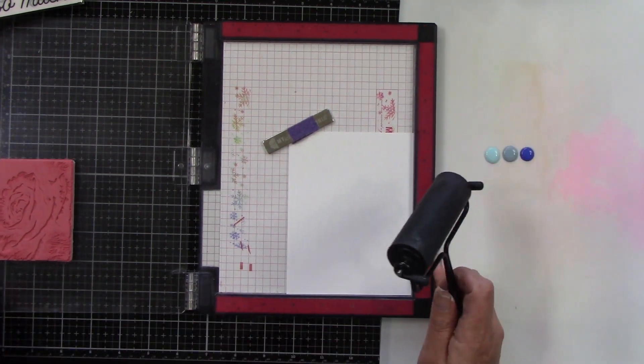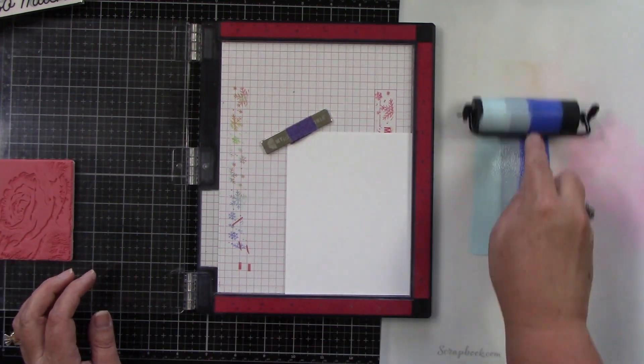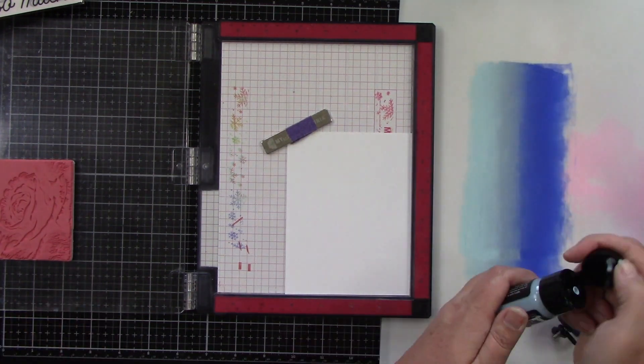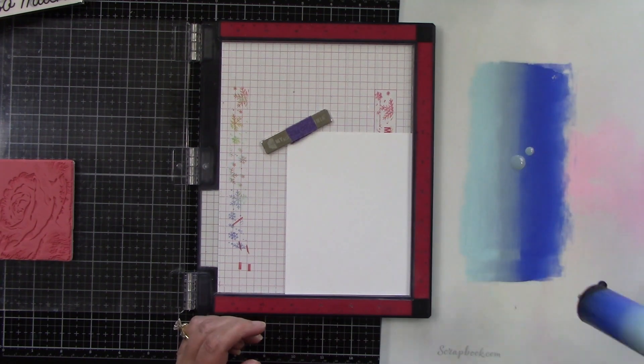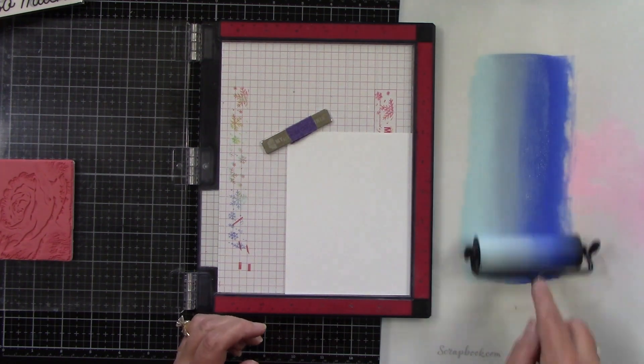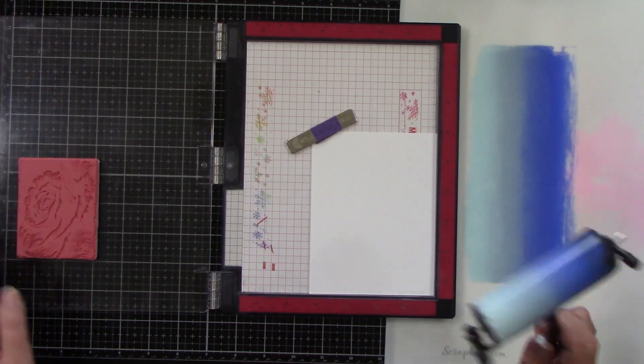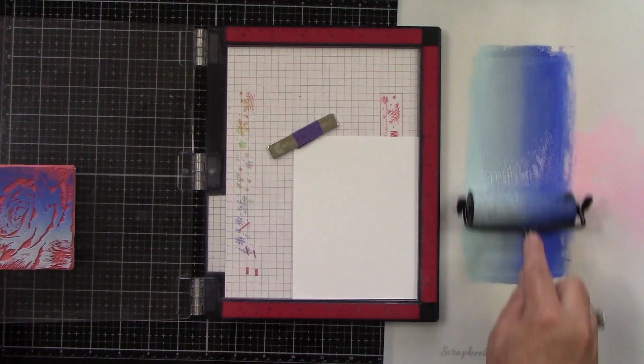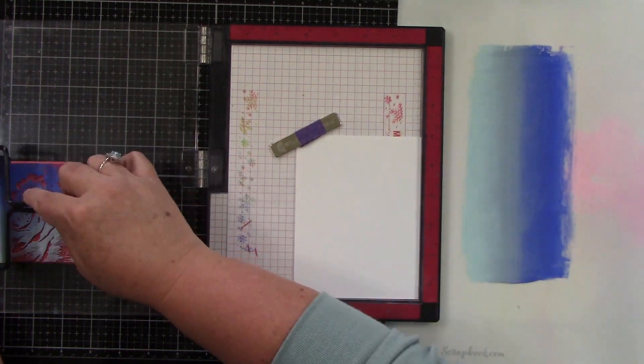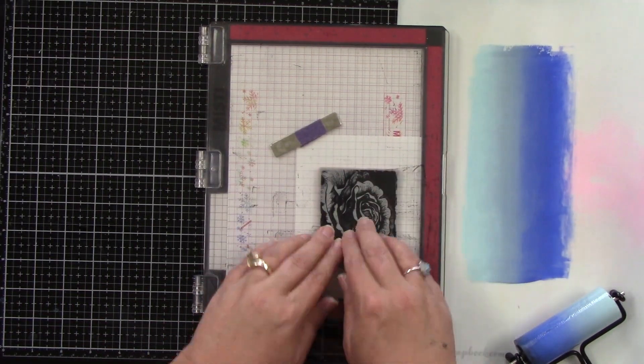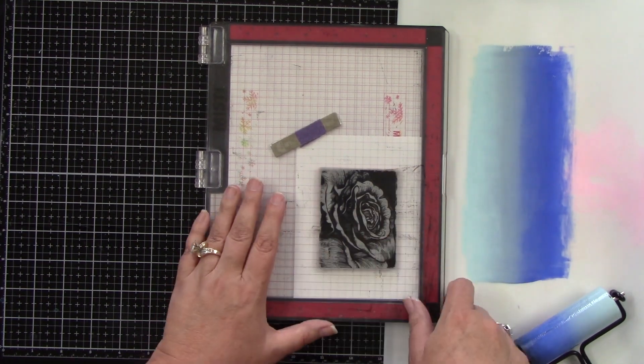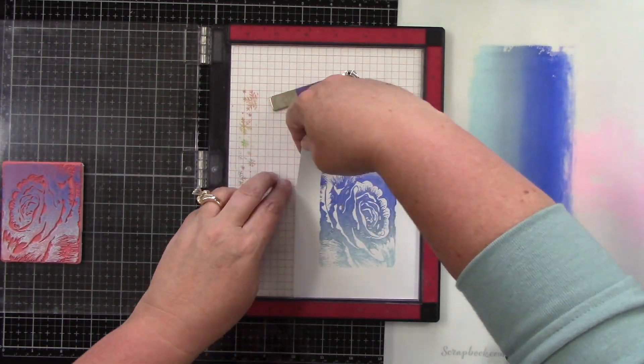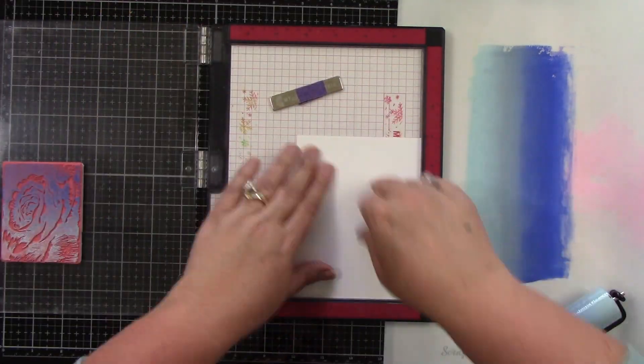This is Stormy Sky, Tumbled Glass and Blueprint Sketch. Actually, Tumbled Glass is the lightest color. And then Stormy Sky and then Blueprint Sketch. I didn't have quite enough. So I'm going to blend that and get a nice good ombre. I've got my third stamp here. Again, this is from the Bold Botanicals. And I'm just gently rolling across, not pressing at all. I'm just letting the weight of the brayer just sit on top of the stamp. And then you get this beautiful image.